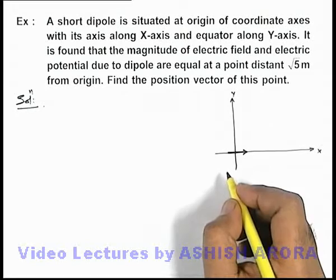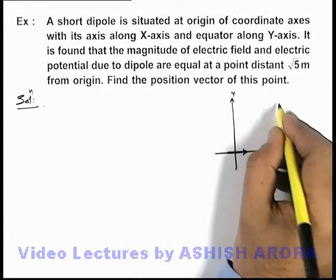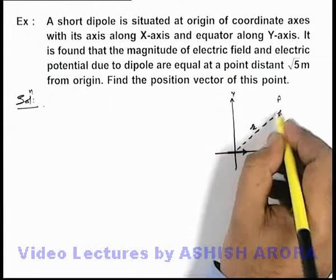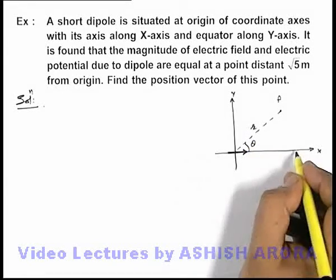It is given that magnitude of electric field and potential are equal at a point, say this point is P, which is located at a distance r from the origin and at an angle θ from the axis of the dipole.